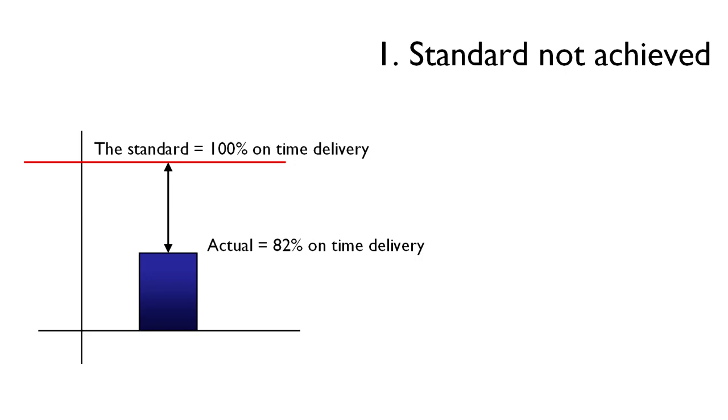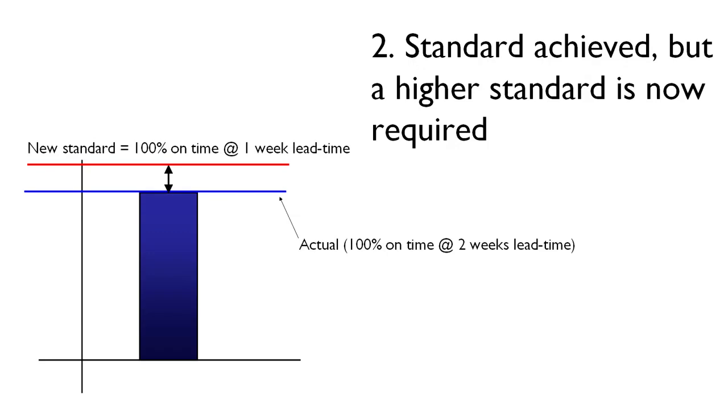The second type of problem occurs when a standard is achieved, but a higher standard is now required. Staying with the on-time delivery example, if we're currently performing at 100% on-time delivery at a quoted lead time of two weeks, our customers may very well ask us to reduce our lead time to one week while still maintaining 100% on-time delivery.